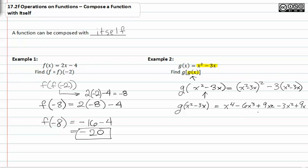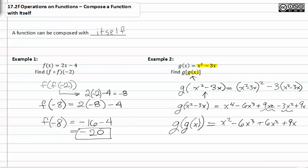Now we can combine like terms to get x to the fourth minus six x to the third plus six x squared plus nine x. There are no more like terms to combine, so g of g of x is equal to x to the fourth minus six x to the third plus six x squared plus nine x.